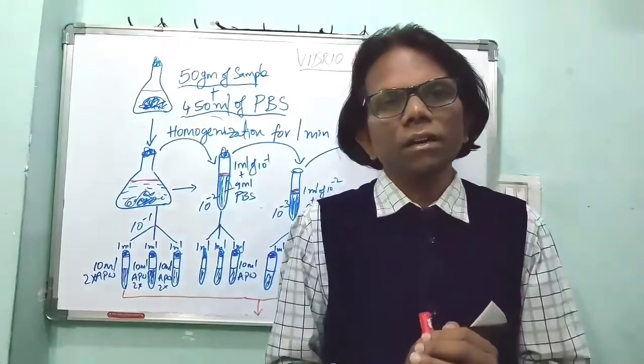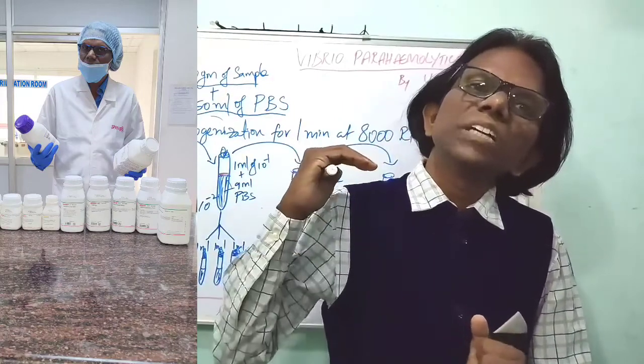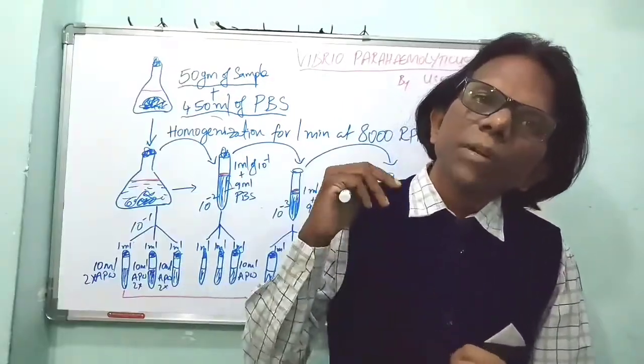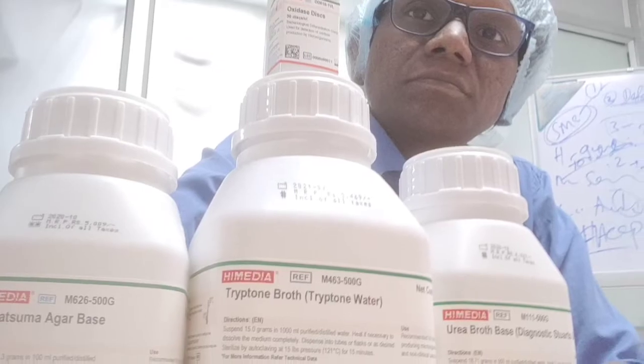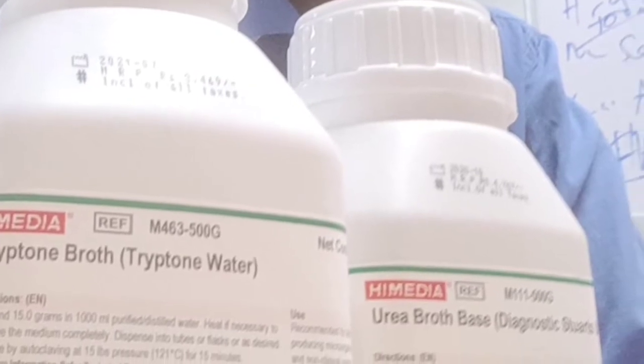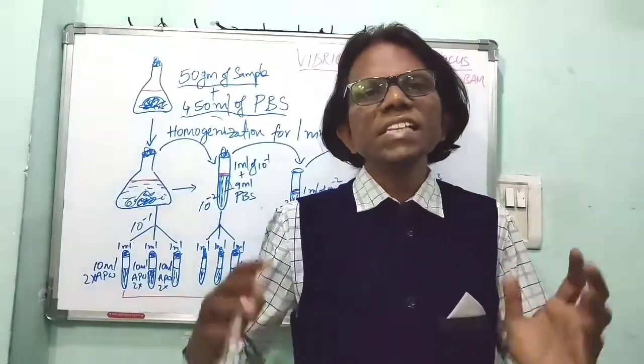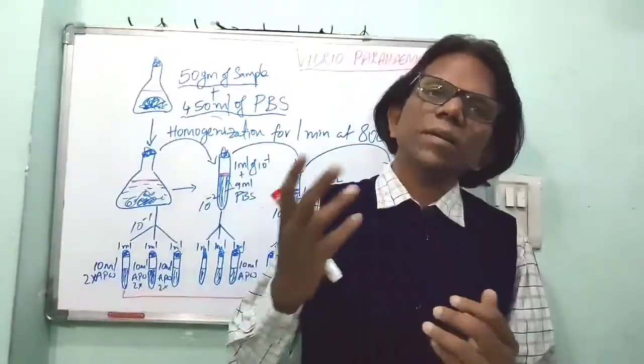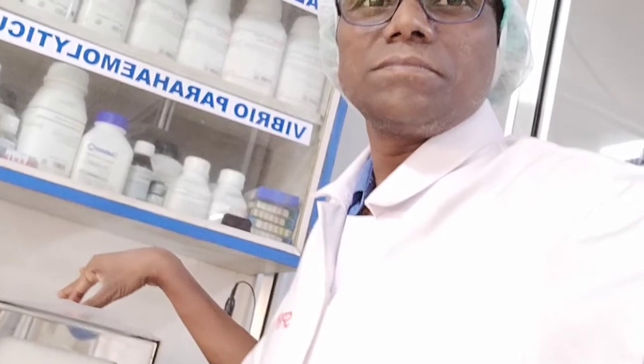Another one is Wagatsuma media for the Kanagawa reaction. Wagatsuma agar is used to determine the hemolysis probabilities of pathogenic Vibrio parahaemolyticus strains. And the rest: saline solution, oxidase reagent, motility medium, urease broth, and other remaining media like arginine glucose slant. For equipment, same as other pathogenic bacteria like Salmonella or Vibrio cholerae - incubators, water baths, autoclaves, laminar airflow chambers, UV chambers, etc.